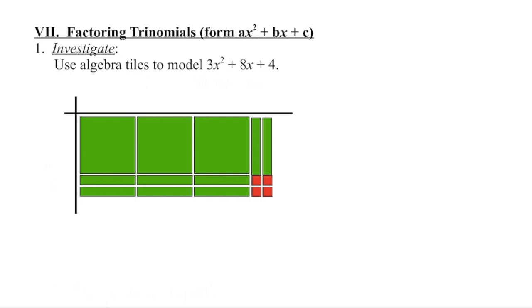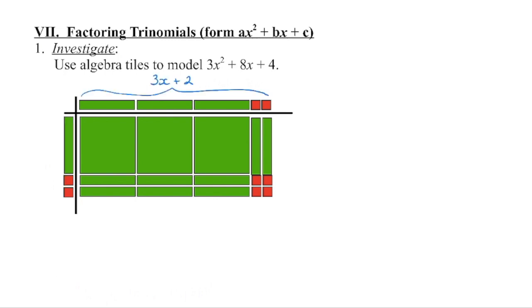We're now going to take a trinomial that has a leading coefficient other than 1, and we're going to use the same process that we did when the leading coefficient was 1. So we can begin with algebra tiles. We have 3 of the x squareds, 8 of the x's, and we're going to put 1 here, 1 here, until we fill in the rectangle, and then the 4 little ones are going to go in the corner. We can see that because we have all positive tiles, we have a length of 3x plus 2, and a height or width of 1x plus 2. These are the factors of this trinomial, and we can check by foiling this out.